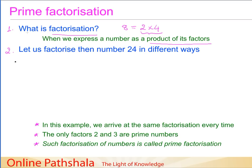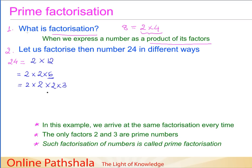Now let us factorize the number 24 in different ways. One way is to write 24 as 2 multiplied by 12. The goal is to keep factoring each factor until no further factorizing is possible. This 2 stays as it is, but 12 can be written as 2 multiplied by 6, and that 6 can be written as 2 multiplied by 3. We now have one factored representation of 24 starting from 2 by 12.